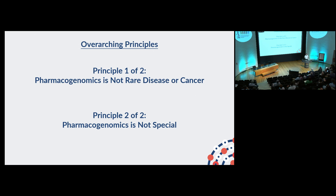Some overarching principles we always think about: pharmacogenomics is not rare disease or cancer. We can learn a lot from what's been done already, but if we try to apply the same principles from rare disease or cancer, implementation will just not work — the people using the data and how the data is used is fundamentally different. And pharmacogenomics is not special; it is not a panacea. It is part of an overall healthcare system and just one variable that can inform prescribing. We shouldn't take an exceptionalist or deterministic viewpoint of pharmacogenetics.